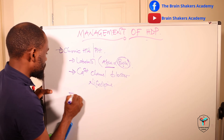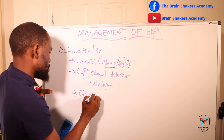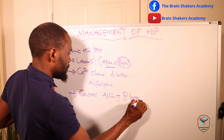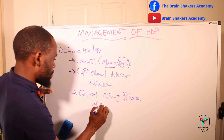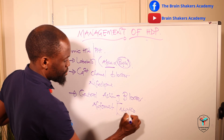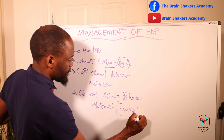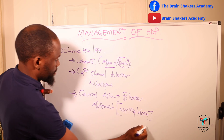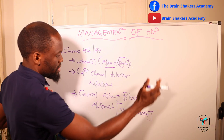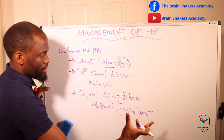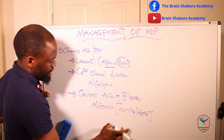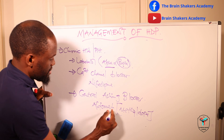Your third line is a centrally acting blocker. You can choose aldomet, whose active ingredient is methyldopa. This is a centrally acting blocker that causes a reduction in blood pressure and also reduces peripheral vascular resistance by affecting the functionality of the central nervous system.